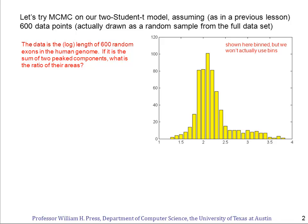In the previous segment, we looked at the theory of Markov chain Monte Carlo. Now it's time to try it out on a couple of examples. This segment and the next will be two examples. Let's try it out on a data set we've seen before — we saw it in segment 31, called 'A Tale of Model Selection.' This is a set of lengths of exons from the human genome — actually, the log of their length.